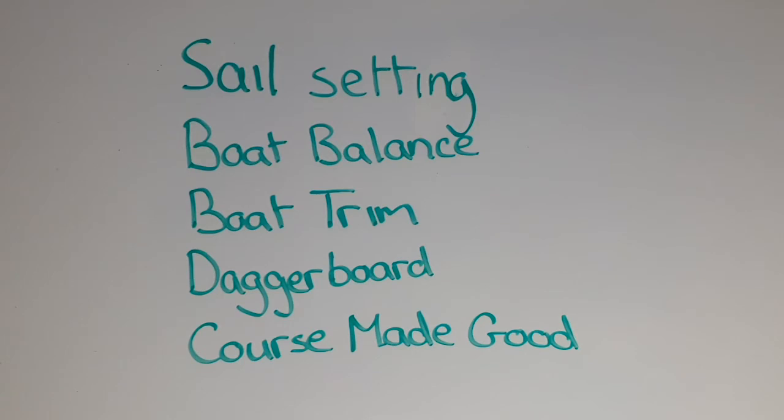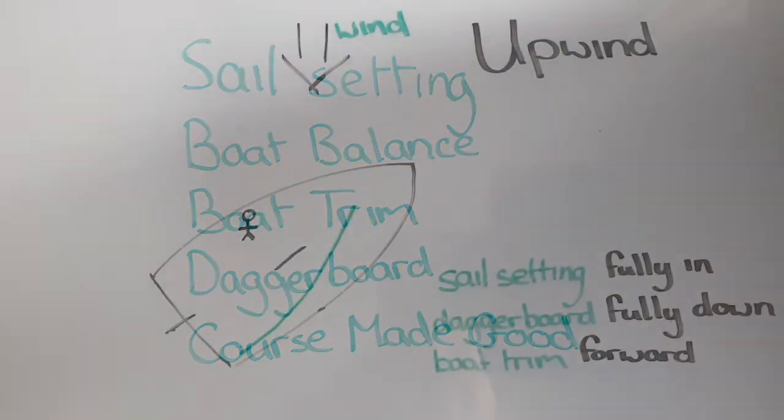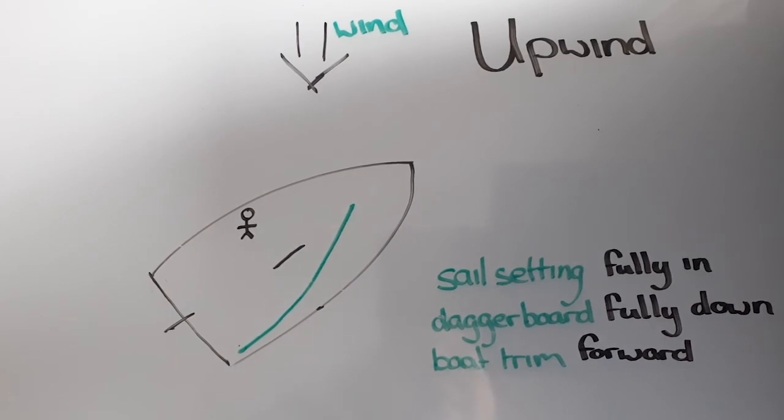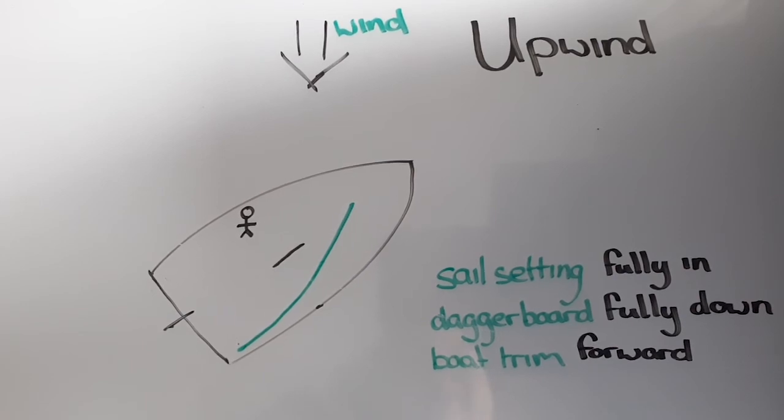You're better to do a few tacks rather than try one big tack. The first point of sailing we're going to look at is upwind. You can see here the wind is coming from the top of the board and we're sailing as close to the wind as possible. With our sail setting on this point of sailing, you want the sail to be nice and tight with the outhaul, downhaul, and kicker on tight as well.